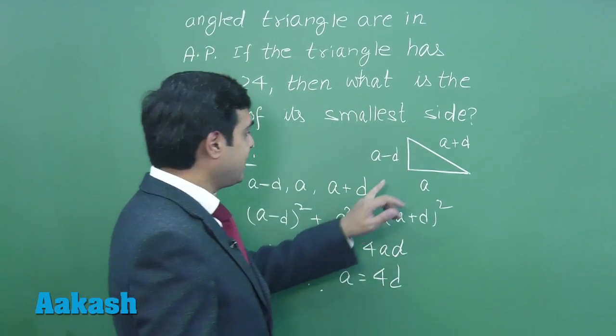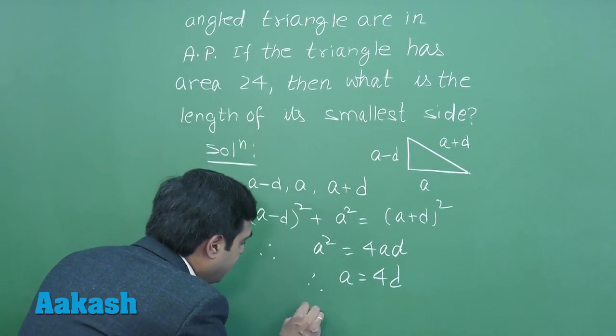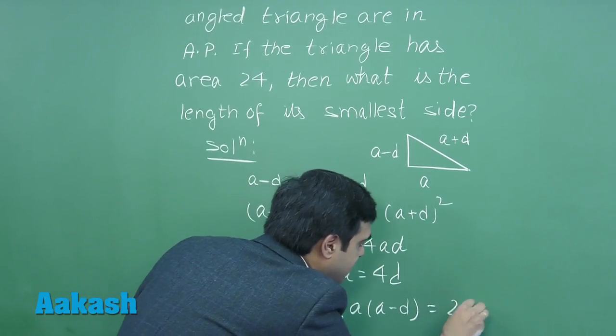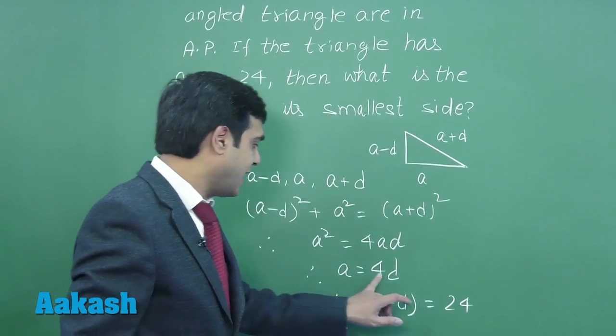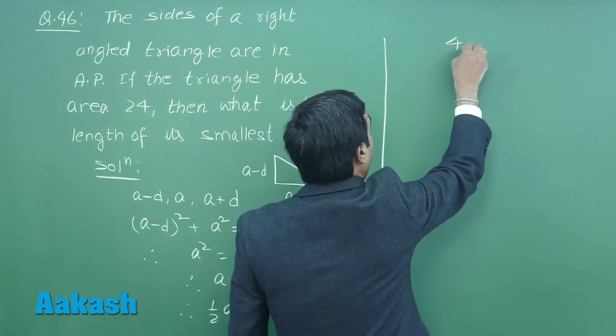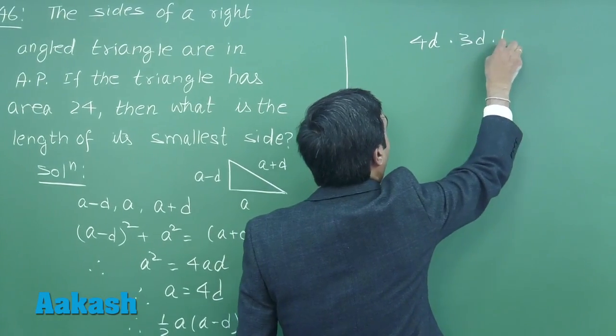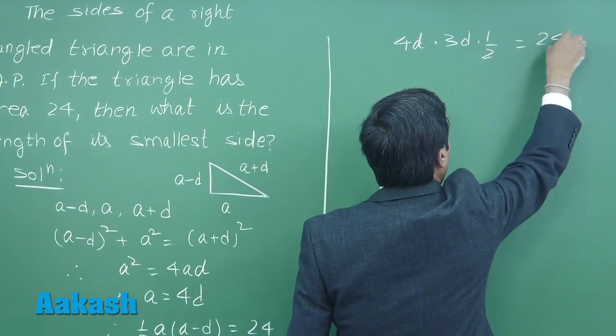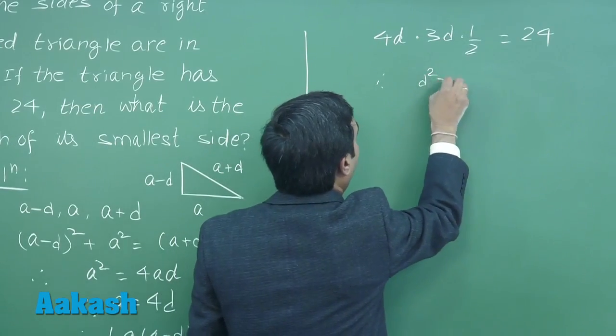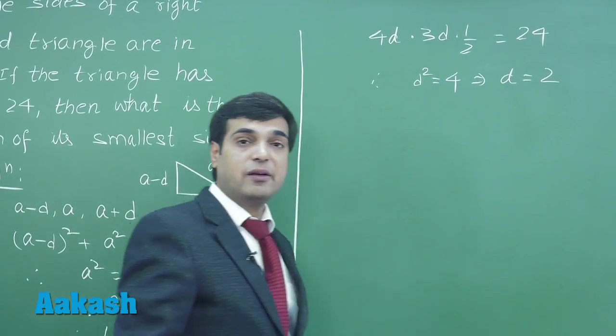Next, it is given area is 24. Since area is half base into height, it gives me ½ × a × (a - d) = 24. Substitute the value for a as 4d here. We obtain 4d × 3d × ½ = 24.